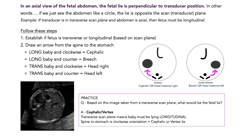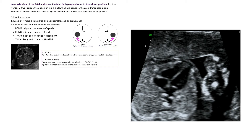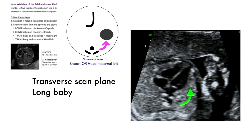In all of these images we've been using the stomach as our guide, but technically we can use any organ found on only one particular side of the fetus. We could also use a four-chamber heart view, because the apex of the heart is supposed to be on the left side of the fetus. Instead of an abdominal view with the stomach, we could see a chest view with the apex of the heart. We solve it exactly the same way. If they tell us it's a transverse scan plane — long baby — we go spine to apex. This one is going counterclockwise, so in a long baby that's breech.